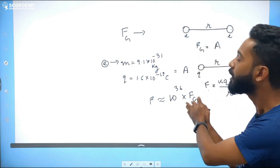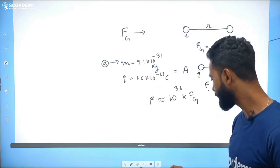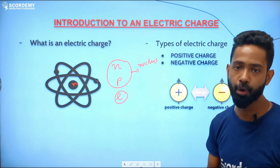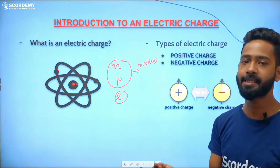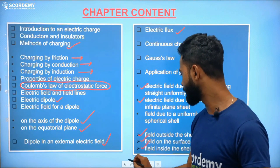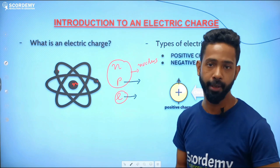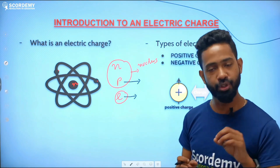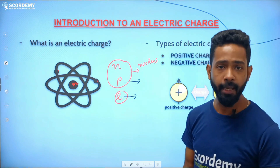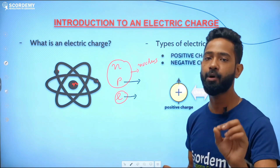This is basically the origin and first fundamental introduction to electric charge. Now, what are the types of electric charge? Since electric charges can be constituted by electrons and protons — neutrons are neutral so they carry no charge — there can only be two types of charges: one is positive charge, which is carried by the proton, and the other is negative charge, which is because of the electron.